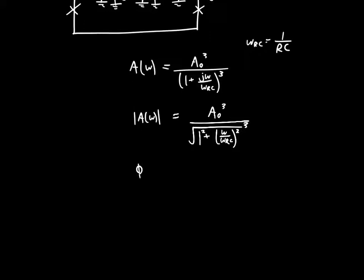And we know that the phase of omega, phi of omega, is equal to 3 times the inverse tangent of omega over omega naught. Well, great. That is all we need to know.